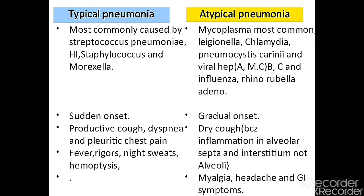For atypical pneumonia, Mycoplasma is the most common bacterial cause. Second is Legionella, then Chlamydia, Pneumocystis carinii, and viral infections. For viral causes, Influenza A is most common, followed by B, C, Influenza, Rhinovirus, Rubella, and Adenovirus — all can cause atypical pneumonia.